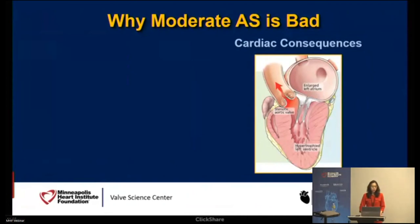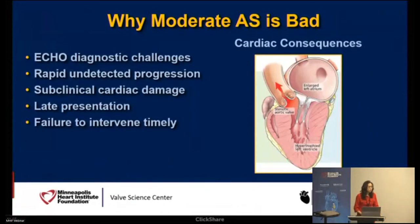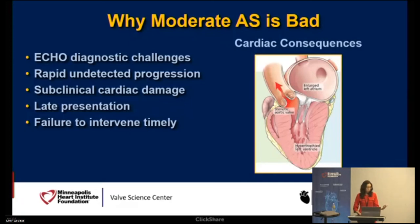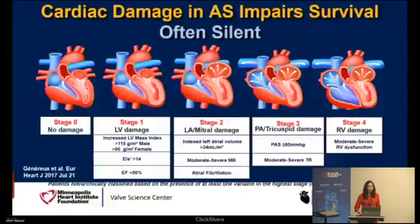These patients with moderate AS have characteristics including type 2 diabetes, coronary artery disease, low ejection fraction, and symptoms at presentation. Why is moderate AS bad? These patients develop back pressure with left ventricular hypertrophy, enlarged left atrium, and ultimately pulmonary vascular resistance and right-sided pressure. Moderate AS patients are often undetected, are fast progressors to severe AS, develop subclinical cardiac damage, present late with symptoms, and we as physicians fail to detect and intervene in a timely manner.